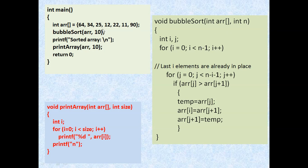Now, how many loops do we need in bubble sort? We basically need two loops: one outer loop and one inner loop. The outer loop controls the total number of passes, and the inner loop handles comparisons within each pass. For the outer loop, I goes from 0 and I is less than or equal to n minus 1, meaning from 0 to 9 the loop will move.